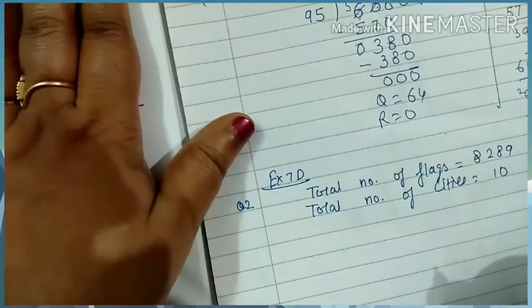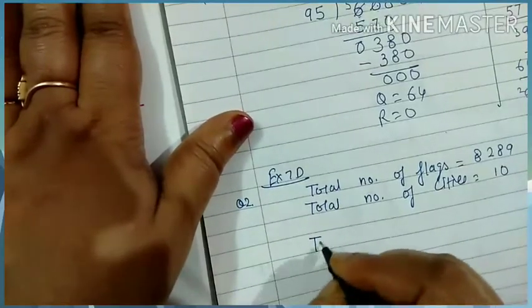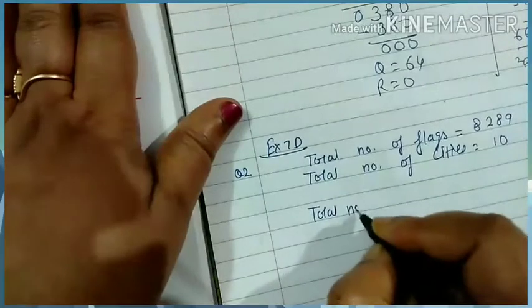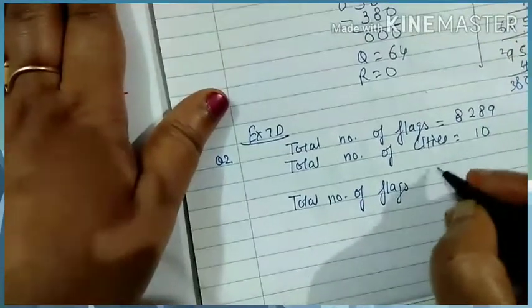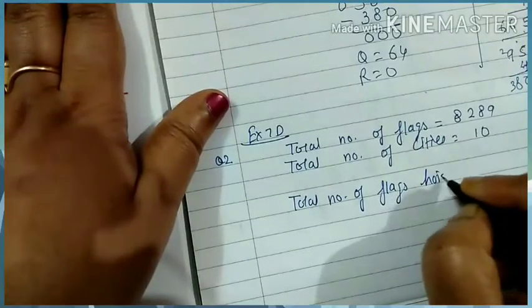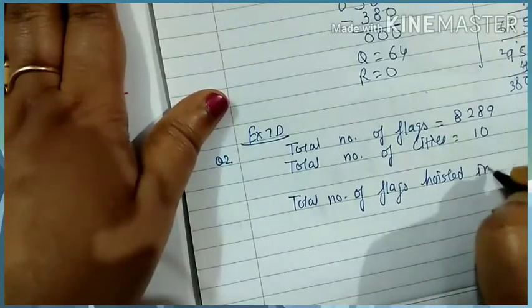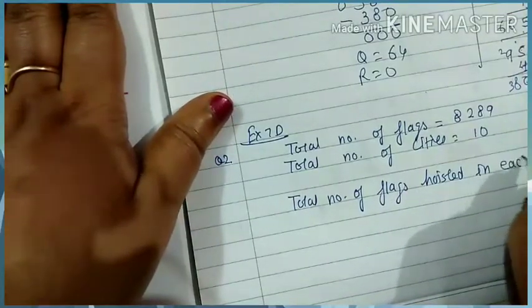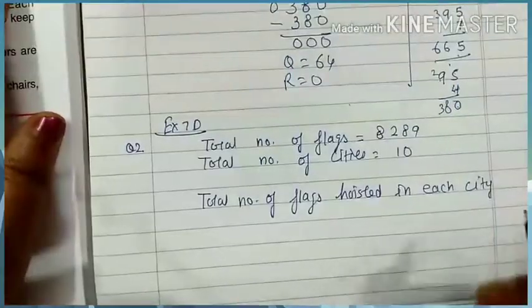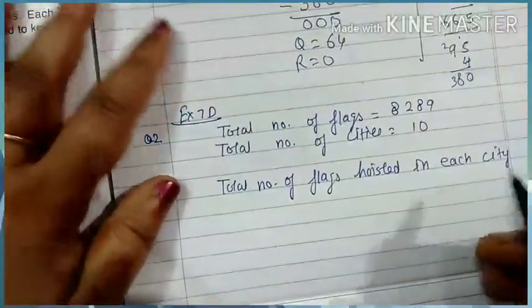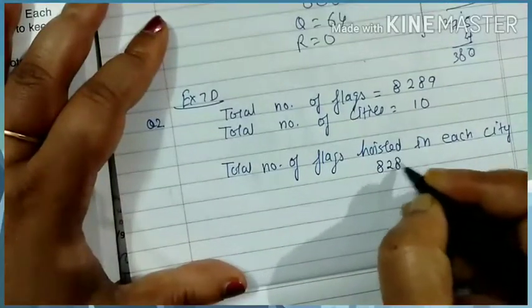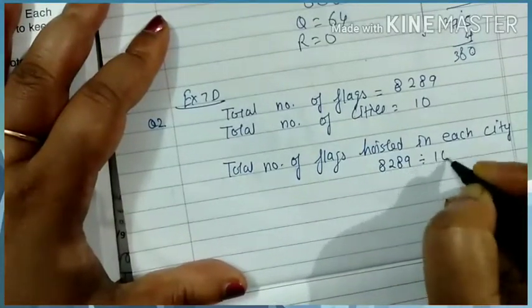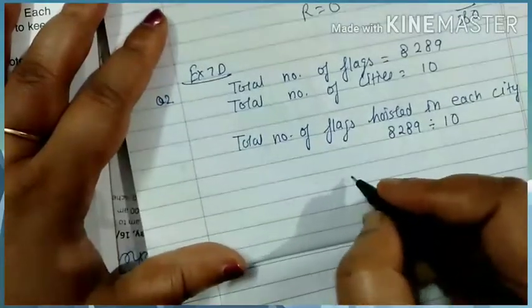How many flags were hosted in each city? Total number of flags hosted in each city. Each city is equal to how much? 8289 divided by 10.